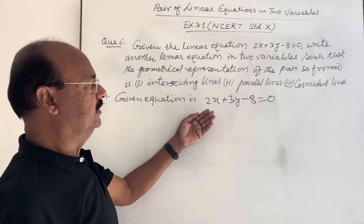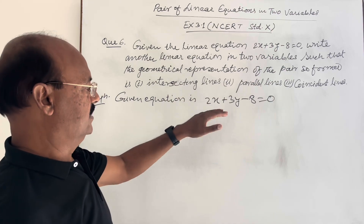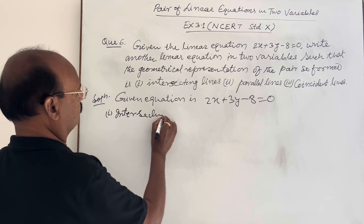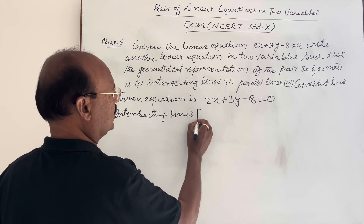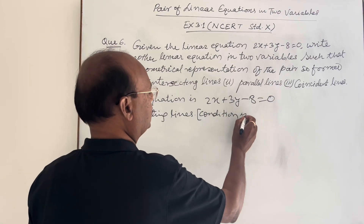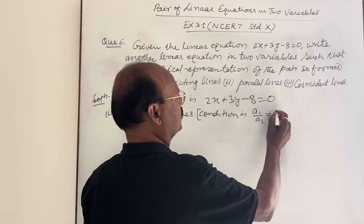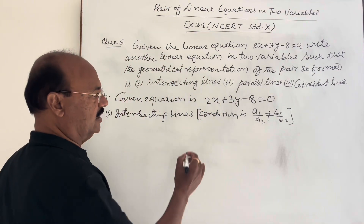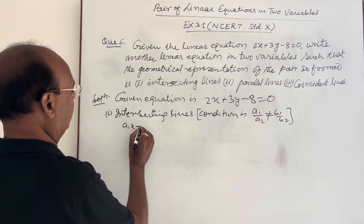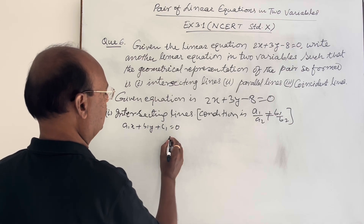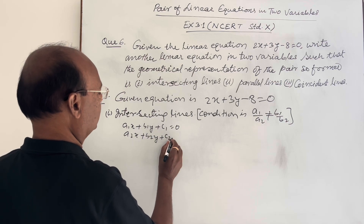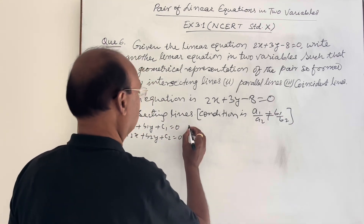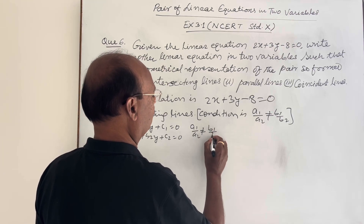Let us write another linear equation in two variables which gives intersecting lines with this equation. The first case is intersecting lines. What is the condition for this? Recall that the general form of a pair of linear equations in two variables is a1x + b1y + c1 = 0 and a2x + b2y + c2 = 0.